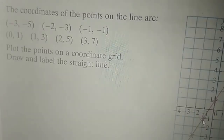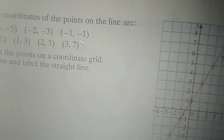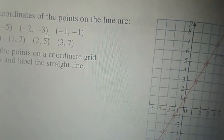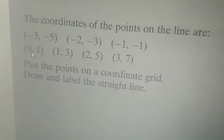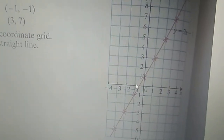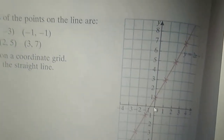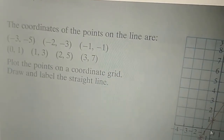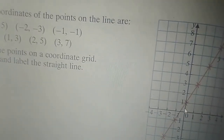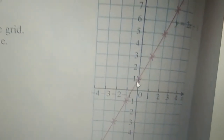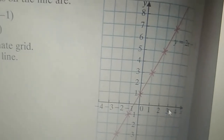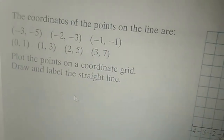The next coordinate is 0, 1. Up till now we dealt with negative values; now we are dealing with positive values. Zero on the x-axis and 1 on the y-axis — they have put a cross mark here. Then 1, 3: 1 on the x-axis and 3 on the y-axis — they have put a cross mark for that coordinate.